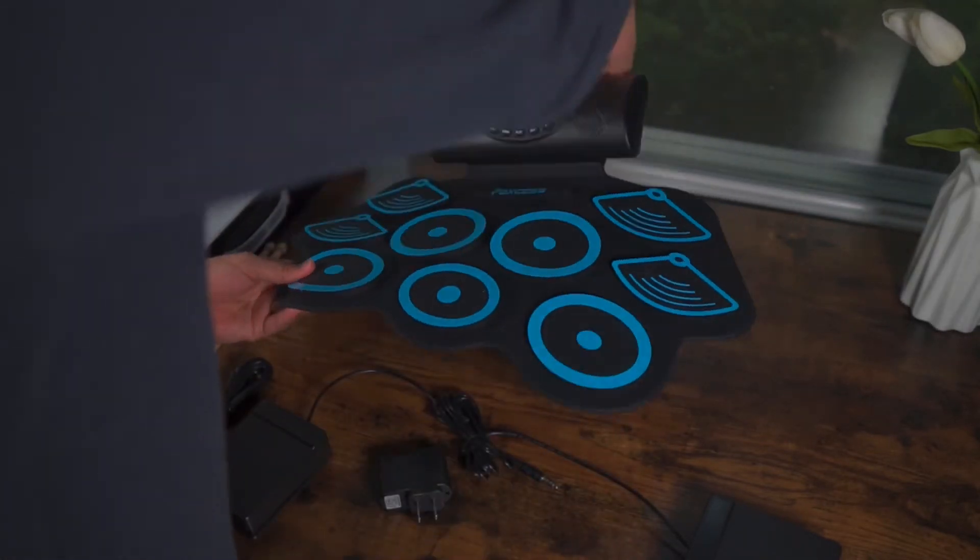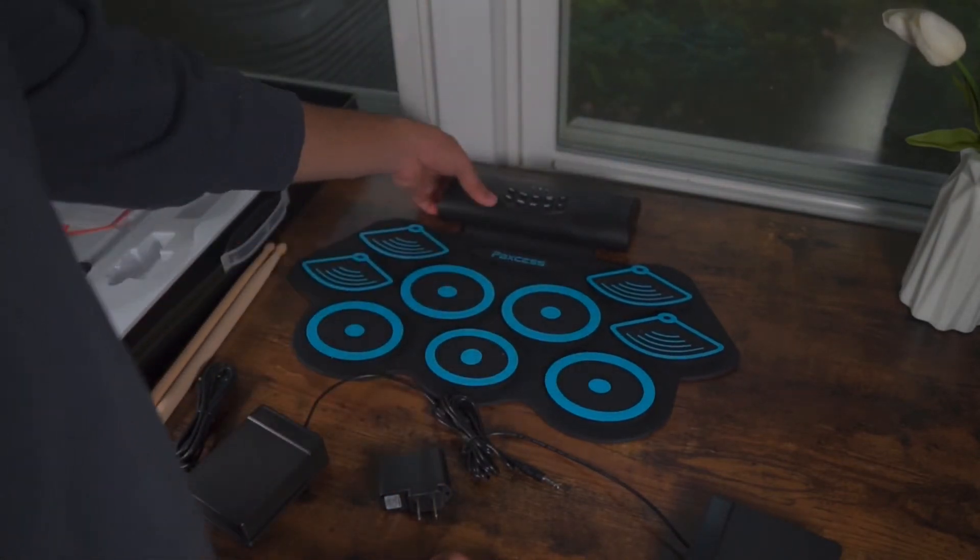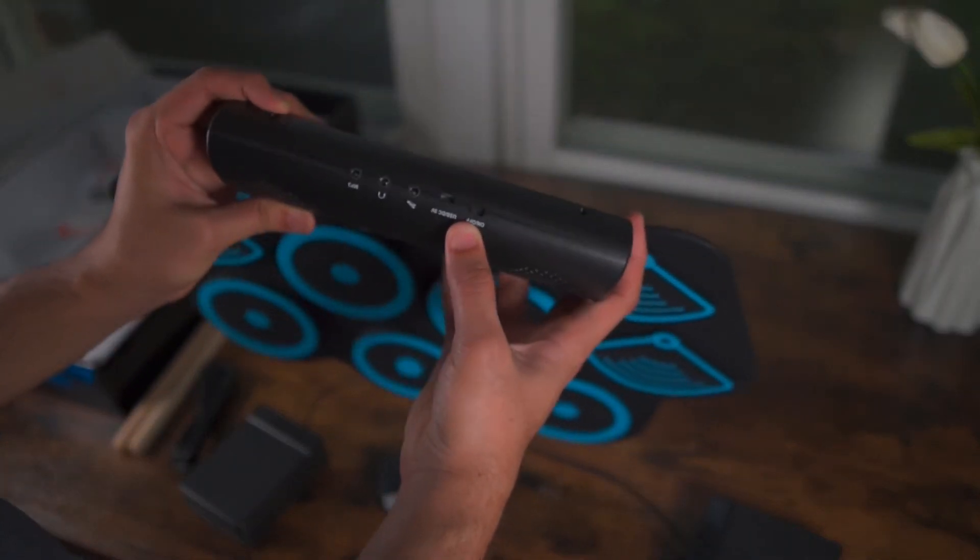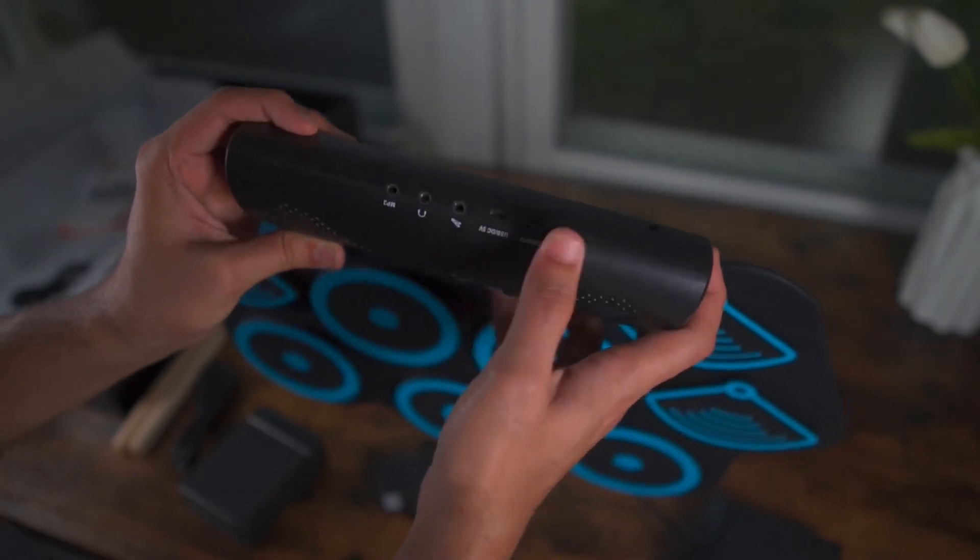And we just went ahead and installed the battery and here are the other controls that are on the control hub. You can turn it on and off and then just plug it in, power it on.